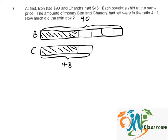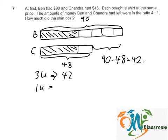So, by comparing the 2 models, we can see that the difference is actually 3 units and that would be $90 minus 48 equals to 42. So, 3 units equals to 42. One unit will be 42 divided by 3 equals to $14.